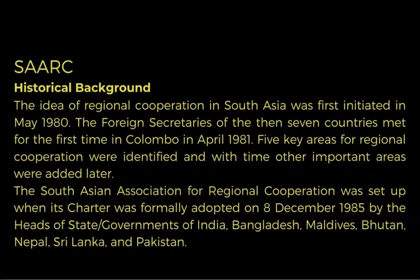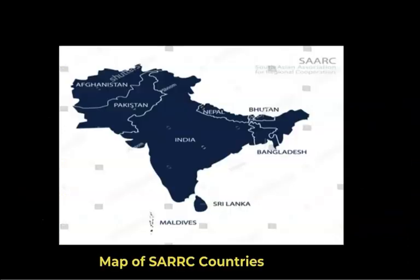Historical background: The idea of regional cooperation in South Asia was first initiated in May 1980. The foreign secretaries of the then seven countries met for the first time in Colombo, Sri Lanka, in April 1981. Five key areas for cooperation were identified, and with time other important areas were added later. The South Asian Association for Regional Cooperation was set up when its charter was formally adopted on 8 December 1985 by the heads of state of India, Bangladesh, Maldives, Bhutan, Nepal, Sri Lanka, and Pakistan.